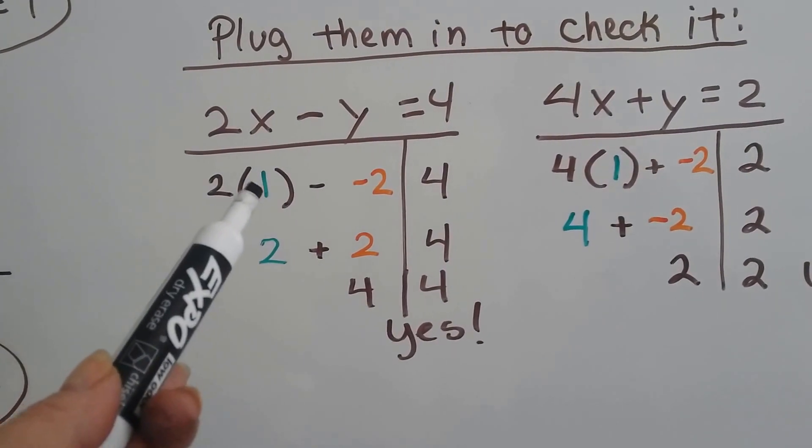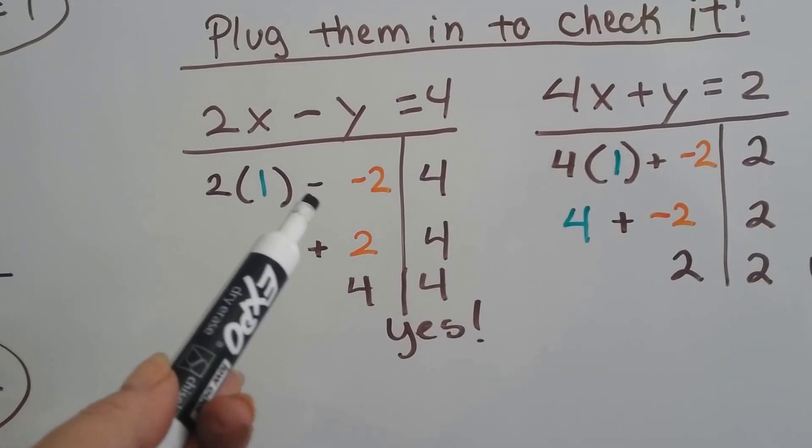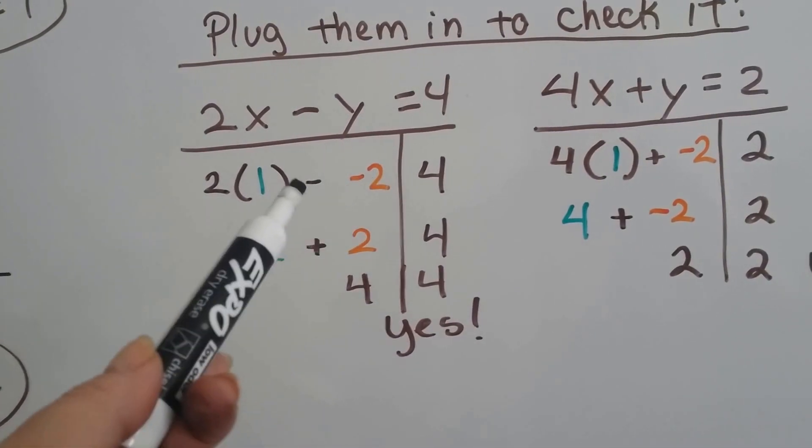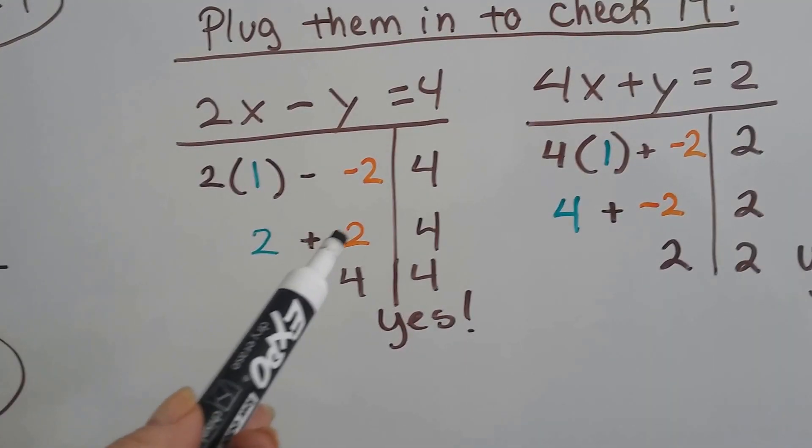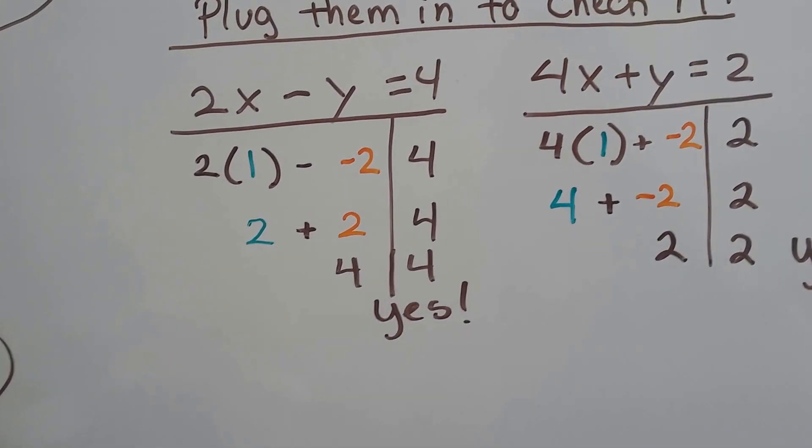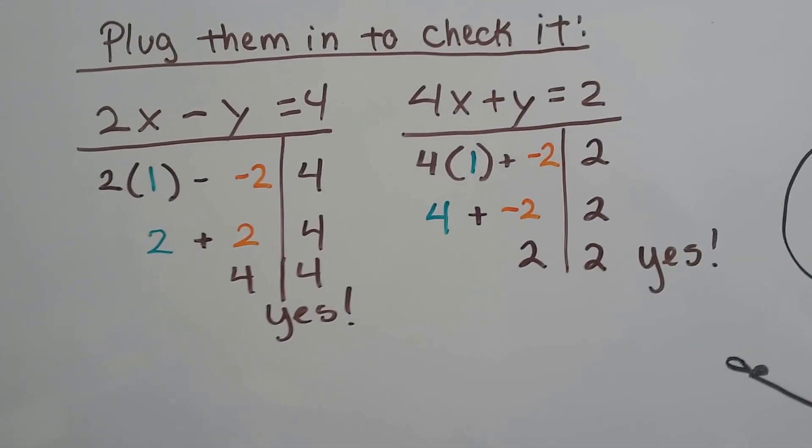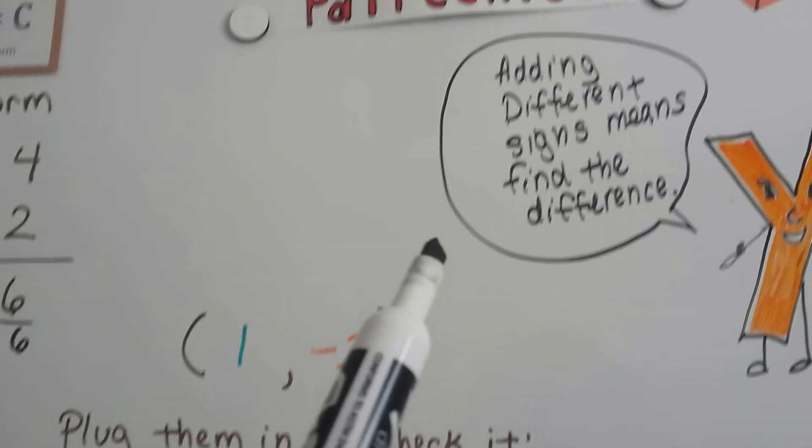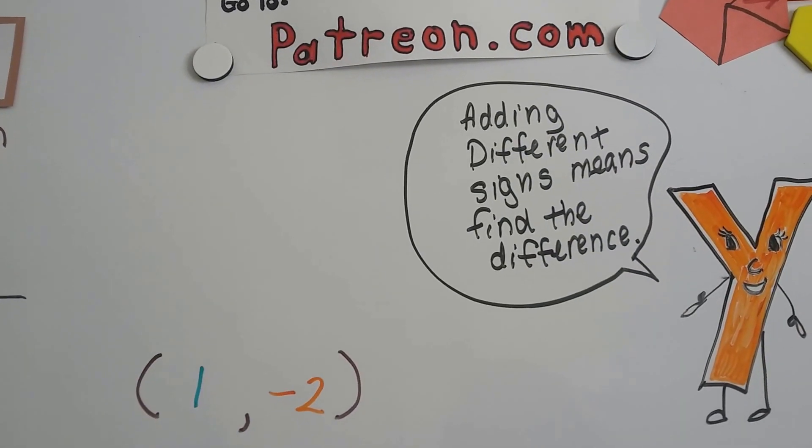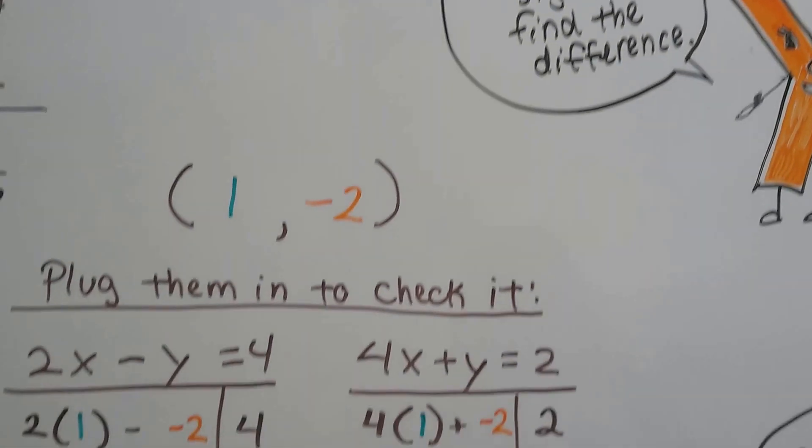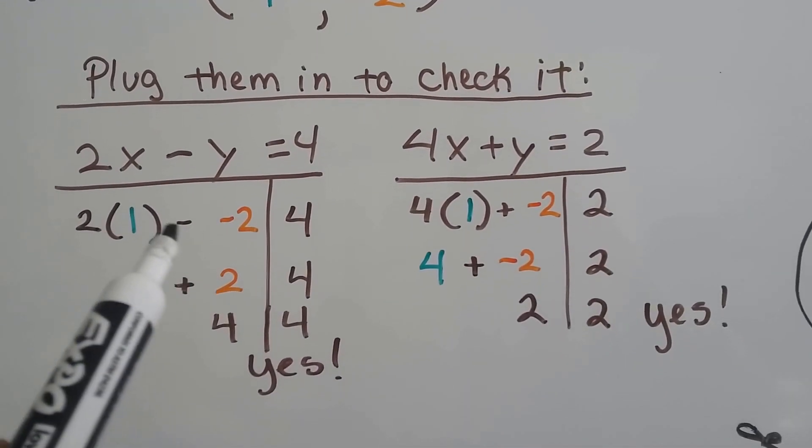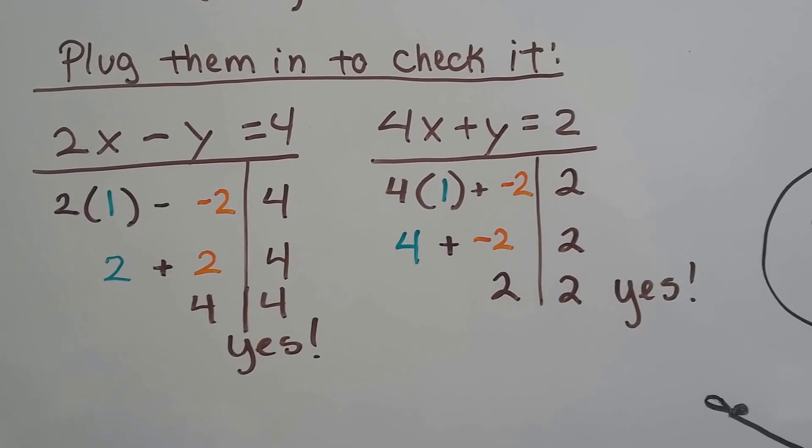2 times 1 is 2 minus a negative 2. When you do that, you add the opposite, don't you? So we're going to add 2. So 2 and 2 is 4, yes. Just remember the rules for your signs. If you're adding different signs, it means you find the difference between them and take the sign of the greater absolute value, right? And when you're subtracting a negative, you add the opposite.